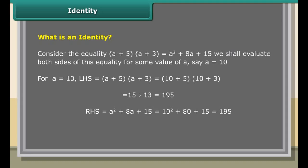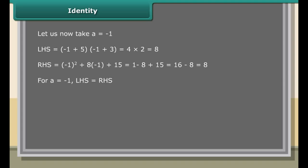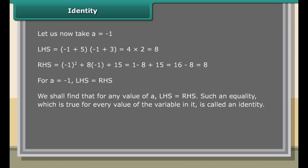What is an identity? Consider the equality (A + 5)(A + 3) = A² + 8A + 15. Let us evaluate both sides for A = 10. LHS: (10 + 5)(10 + 3) = 15 × 13 = 195. RHS: 10² + 8(10) + 15 = 100 + 80 + 15 = 195. The values of both sides are equal for A = 10.